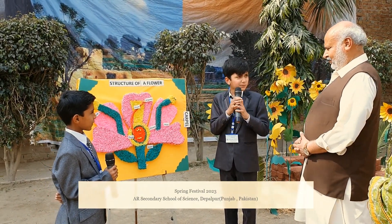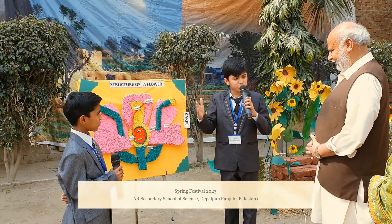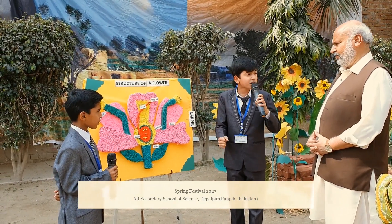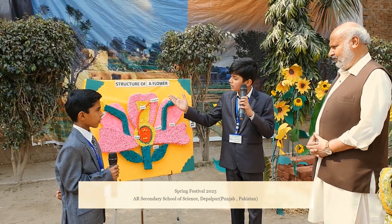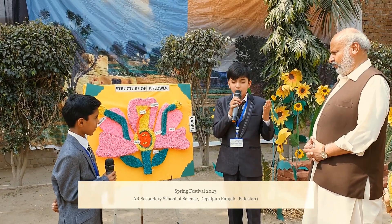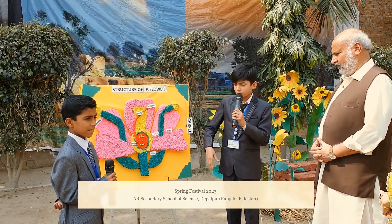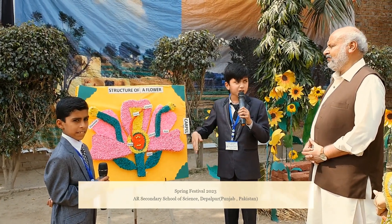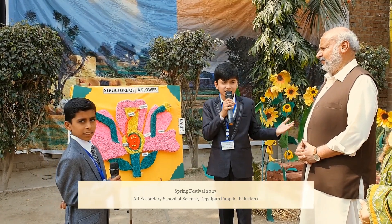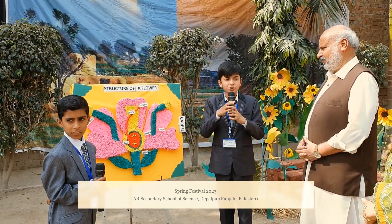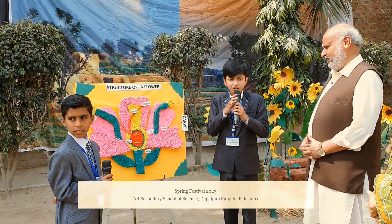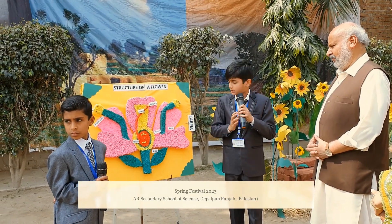A flower, sometimes known as a bloom or blossom, is the reproductive structure of a flowering plant. The biological function of a flower is to facilitate reproduction, usually by providing a mechanism for the union of sperm with eggs. There are four main parts of a flower.